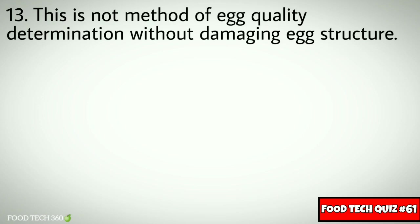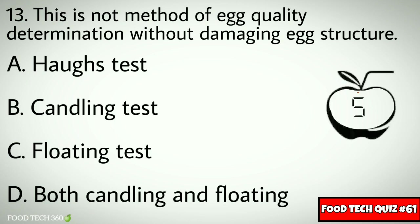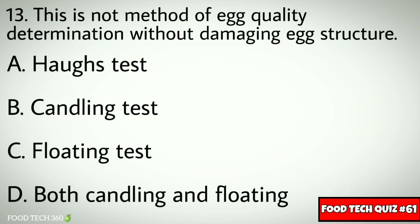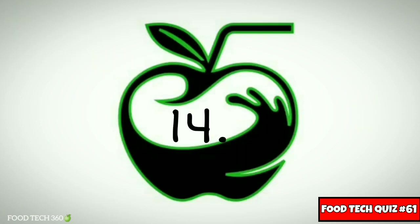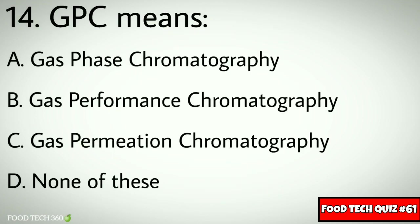Question number thirteen: which is not a method of egg quality determination without damaging egg structure? Options: a) hogs test, b) candling test, c) floating test, d) both candling and floating. Correct answer: a) hogs test. Question number fourteen: GPC means — options: a) gas phase chromatography, b) gas performance chromatography, c) gas permeation chromatography, d) none of these.